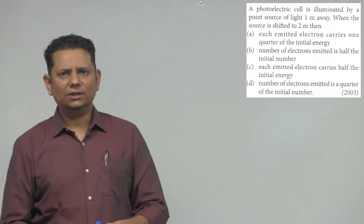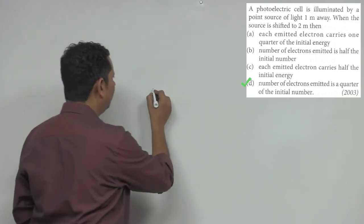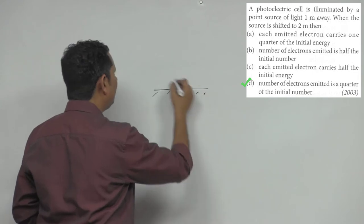Now the right answer is option D. Here you have a plate, and you have a point source.